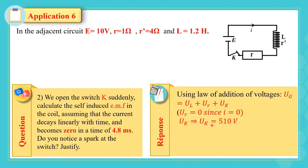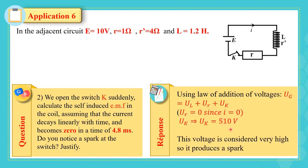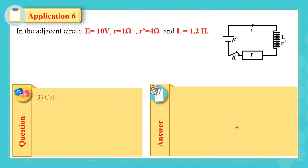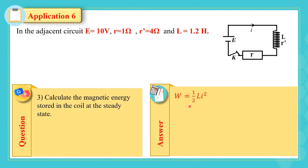When the switch is opened, current is zero so the voltage across the resistor is zero. Therefore U_K = U_G − U_coil. Since U_coil = −500 V (equal to −E), U_K = 10 − (−500) = 510 V. This voltage is considered very high and produces a spark across the terminals of the switch.